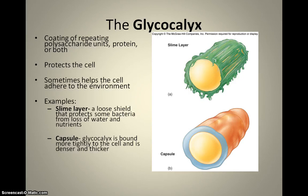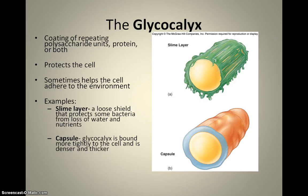The glycocalyx is a complex polysaccharide — sometimes containing some proteins — whose function is to protect the cell. It can provide external protection, prevent water from going in and out, and help adhere to a surface by creating a sticky, slimy layer. There are two different types: the slime layer, which is more for protection, gripping onto a surface, and holding in nutrients; and the capsule, which is a thicker, denser, more rigid external coating that makes it more difficult for things to go in and out.